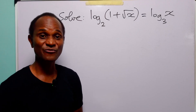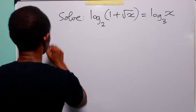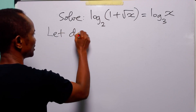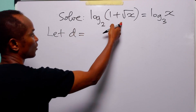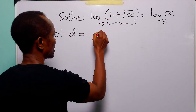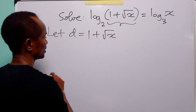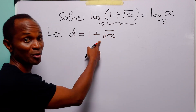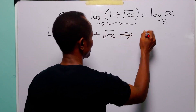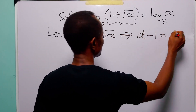We are going to start with a very simple substitution. Let d be equal to 1 plus root x. When we subtract one from both sides of this equation, we have that d minus one is going to be equal to root x.